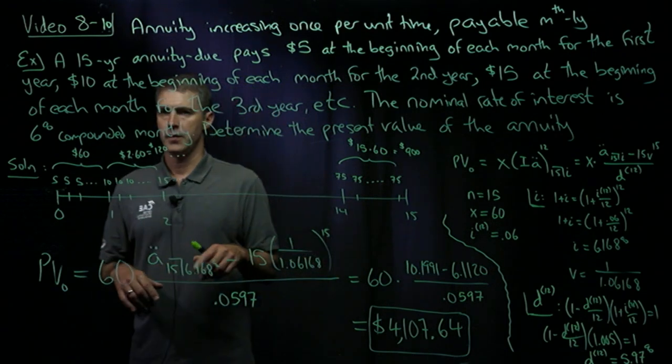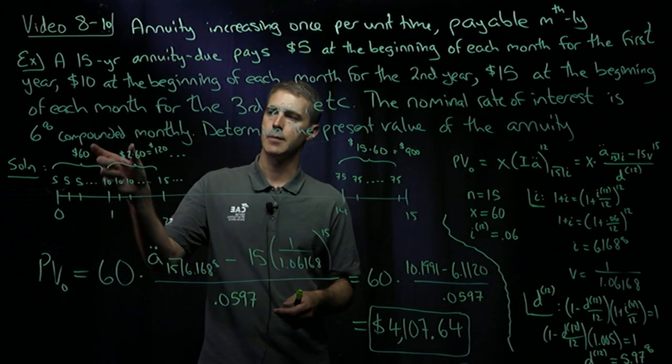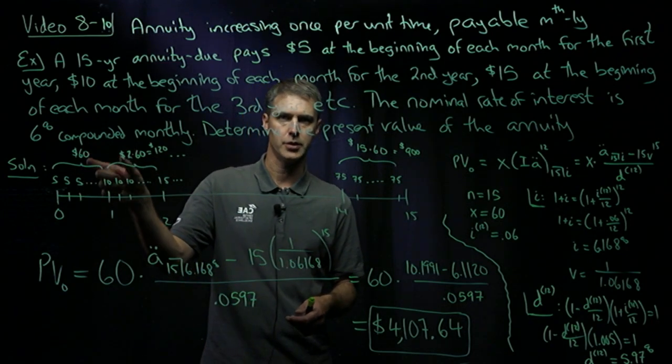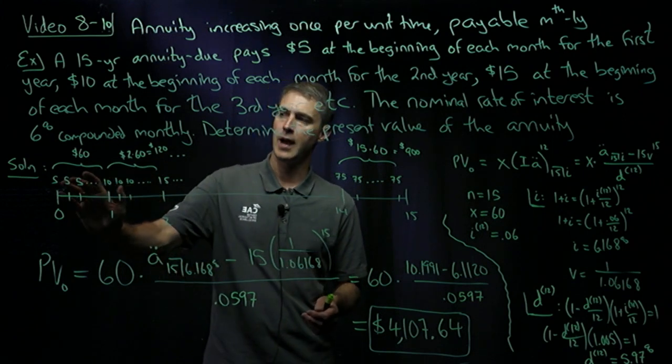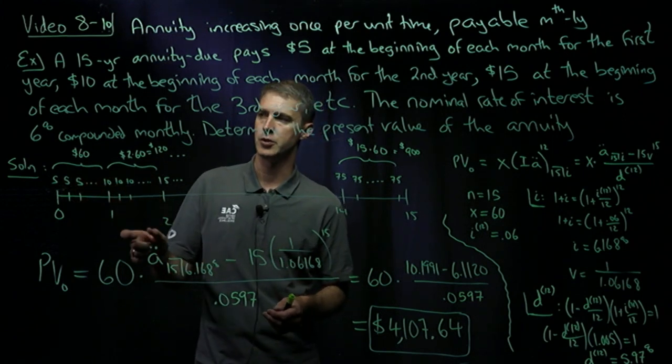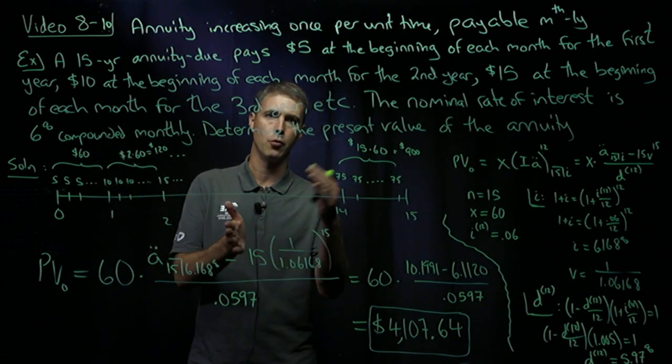Now, thinking back to the previous video with the formula, knowing the value of X is central. X is the amount of money received during the first year, or the first unit of time. In this case, year. So if I'm getting $5 per month for the first year, I'm getting a total of $60 in that first unit of time before my increase.